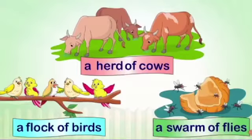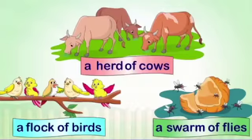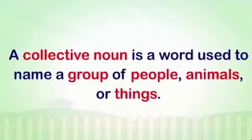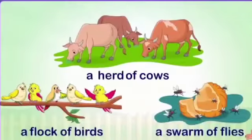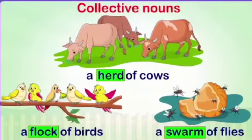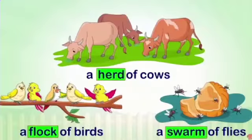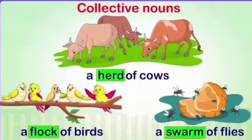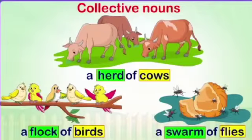Some common nouns have a special name when they are in a group. A collective noun is a word used to name a group of people, animals or things. The words herd, flock, and swarm are collective nouns used to refer to a group of cows, birds and flies respectively.